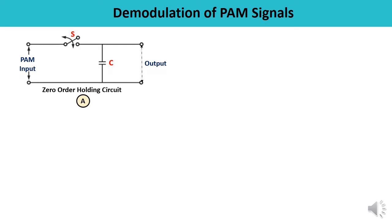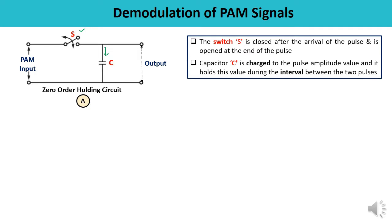Let us draw and understand a simple holding circuit. Here the input is a PAM input. There is a switch S and a capacitor. When this switch is closed, the capacitor will charge to the pulse amplitude value and it will hold that particular value during the time period between the two pulses. So first the capacitor charges to the maximum amplitude and holds that value for that time interval.